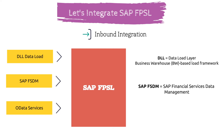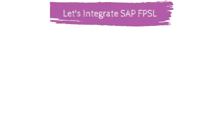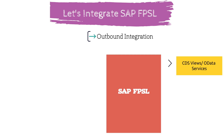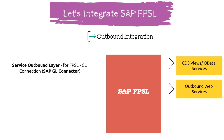To extract data out of SAP FPSL, SAP has provided standard CDS views. You can also use OData services to pull the data out of SAP FPSL. To load subledger documents into SAP General Ledger, SAP has provided a tool called GL Connector.